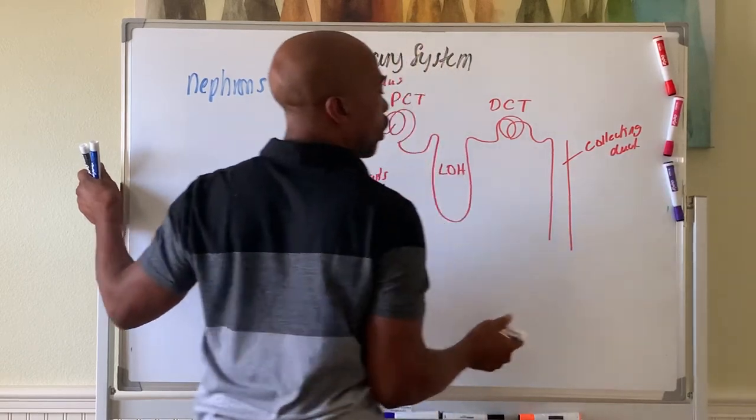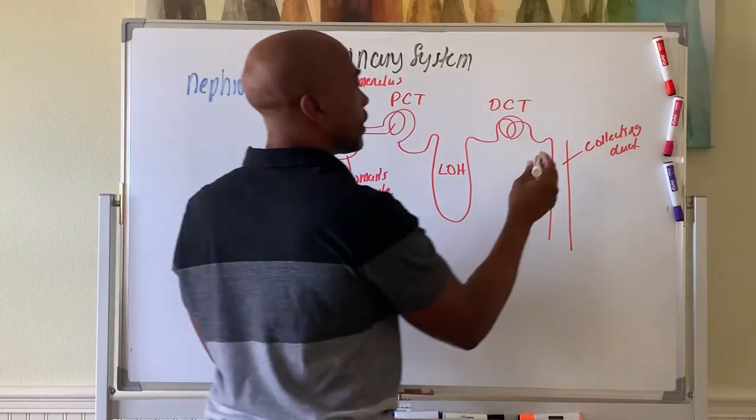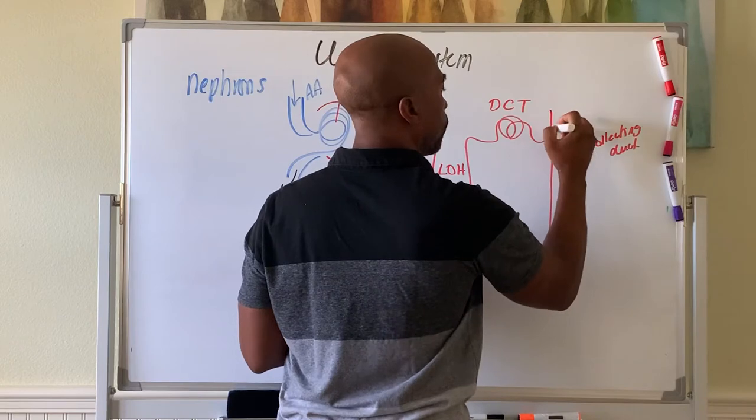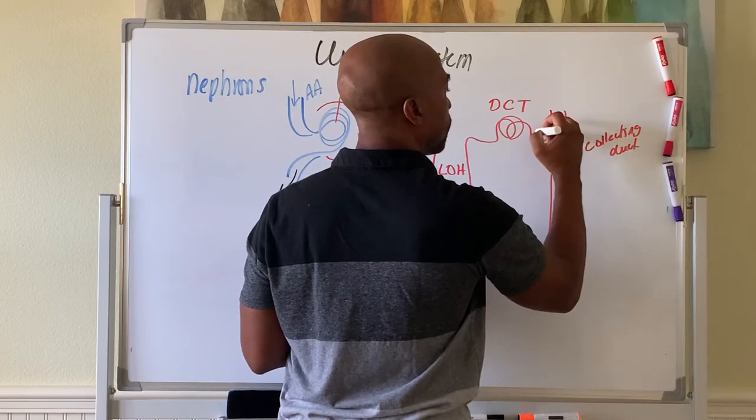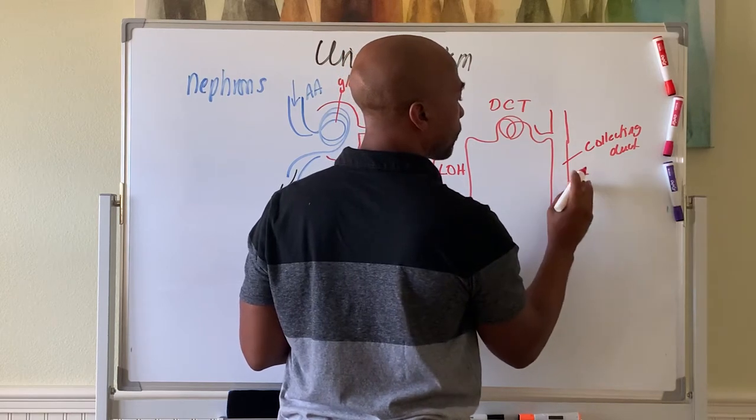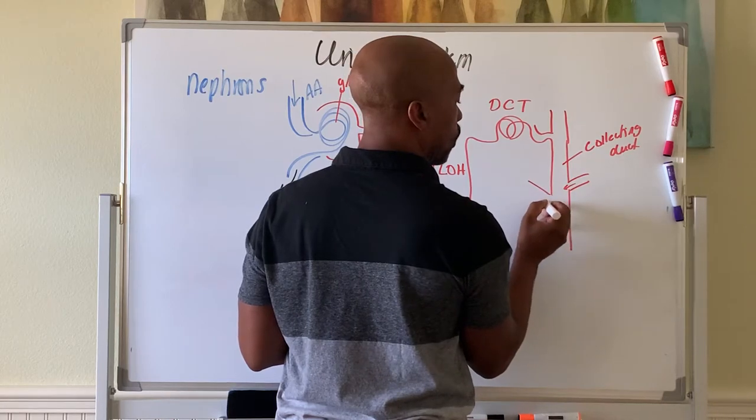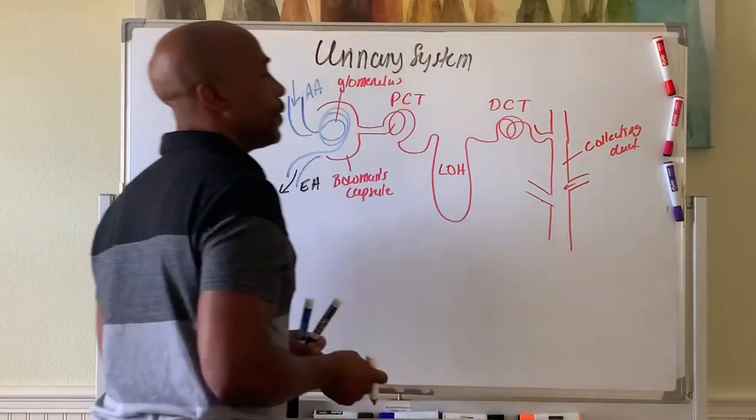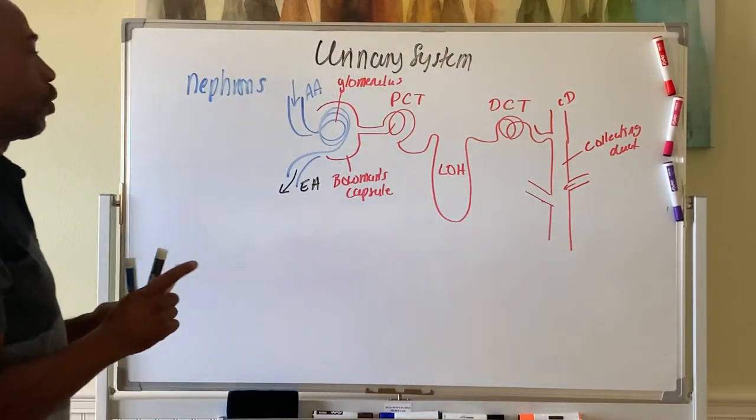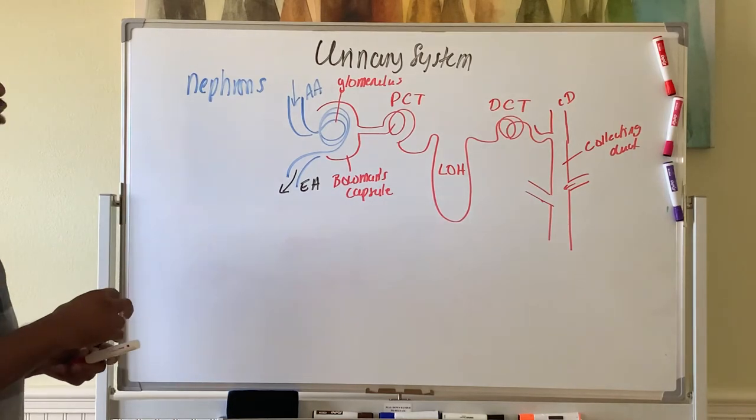The collecting duct collects filtrate from several different nephrons. So this nephron here will feed into it there, feed into it there. Others may feed into it over here. So nephrons all feed into the ducts of collection along the way. Keep this in mind. We'll keep on referring back to this basic structure of the nephron.